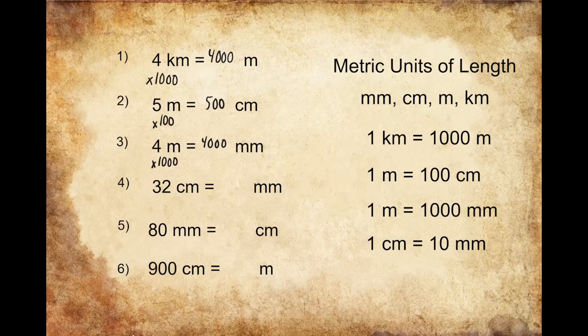For question number four, we're being asked to convert 32 centimeters into millimeters. One centimeter is equal to 10 millimeters, so I know that I'm going to have 32 groups of 10. In order to convert centimeters into millimeters, I'm going to multiply the value of my centimeters by 10. 32 times 10 gives us 320, so 32 centimeters converts into 320 millimeters.